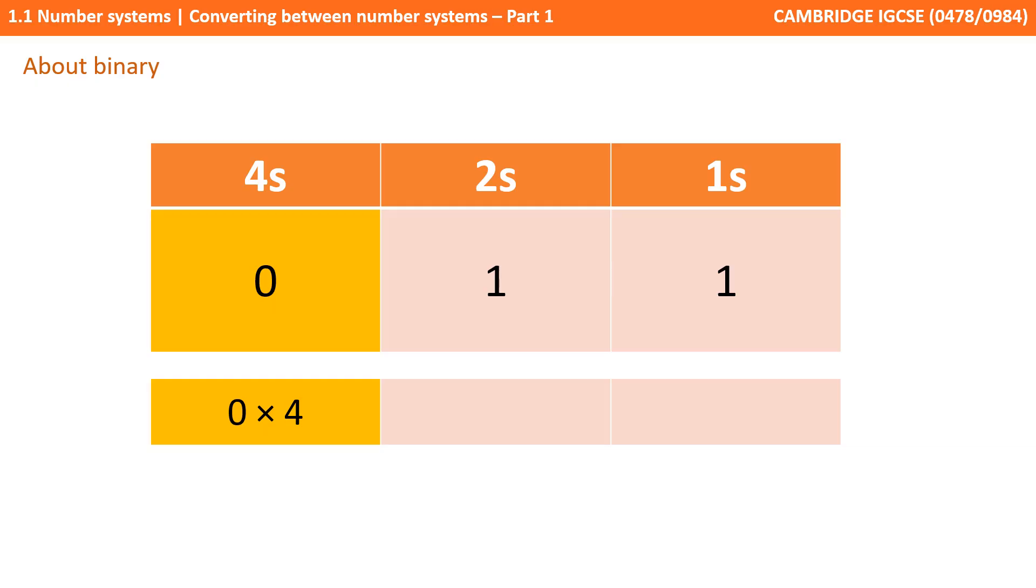The number 3, for example, in 3 bits, would be 0, 1, 1. That means we've got no 4s, plus 1 two, plus 1 one, or 0 times 4 plus 1 times 2 plus 1 times 1, equaling 3. So with a binary number system, each column doubles the one before.